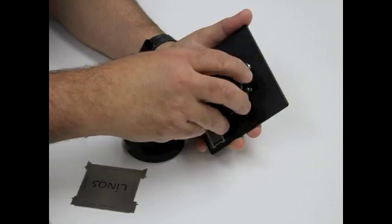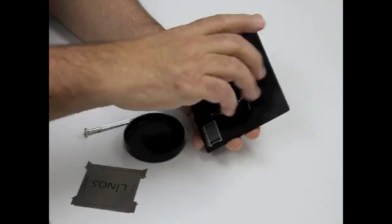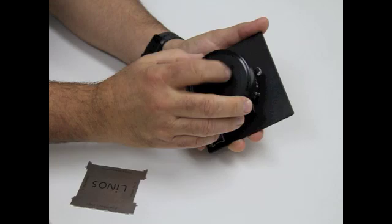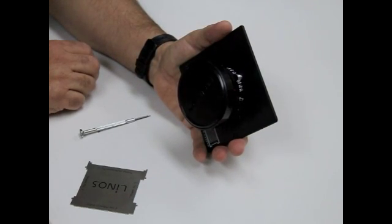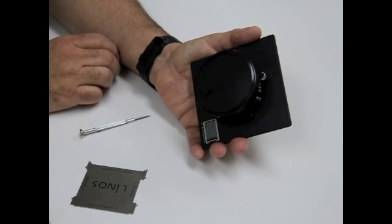So let's put the front element back on. And I'll put the lens cap back on. I hope this helps showing you how to mount a lens on a lens board. Thank you very much.